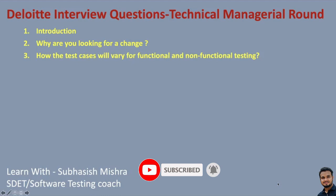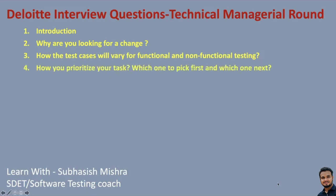How will test cases vary for functional and non-functional testing? In this technical manager round, you will see basic and fundamental questions. How do you prioritize your tasks — which one to pick first and which one next? It's about how you manage your work and how good you are as a team. What is the page object model? Why do we use assert in Selenium? Assertions are very important — without assertions, there is no point in writing automation test cases; you won't be able to find defects otherwise.